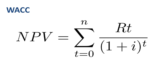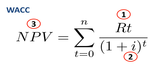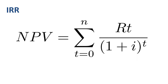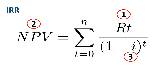Here are the steps to use in the NPV formula when you use weighted average cost of capital. Step 1: Start with the nominal cash flows. Step 2: Apply the WACC as an input variable. Step 3: Calculate NPV. Here are the steps when you use internal rate of return. Step 1: Start with the nominal cash flows. Step 2: Set NPV to zero. Step 3: Calculate IRR as the output variable.